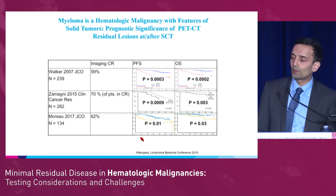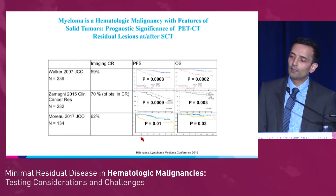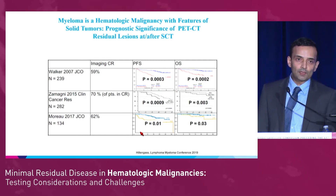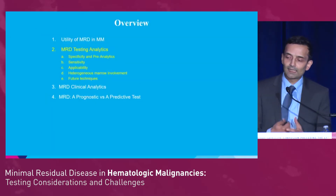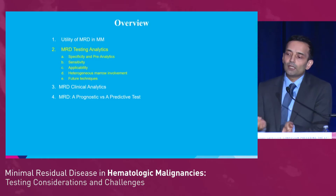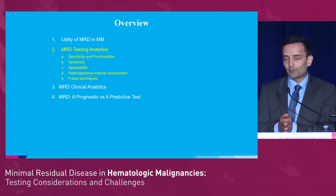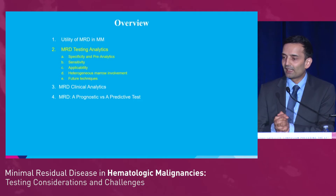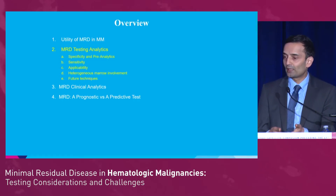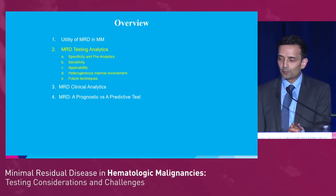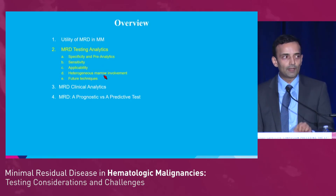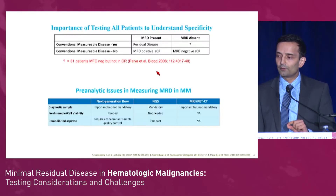Moving to testing analytics — why do we need to look at these? These always seem like very dry topics that maybe pathologists should be doing. But as clinicians, if we're going to be using these tests and ordering them, we have to know at least a little about them. We'll talk about sensitivity and specificity briefly, but I also want to talk about applicability, the impact of having heterogeneous marrow, and some future techniques.